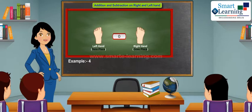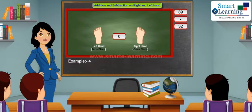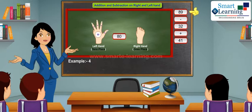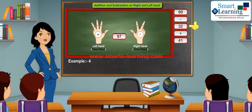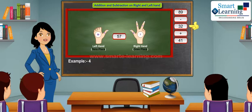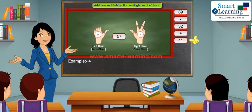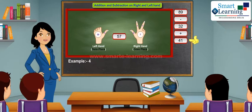Let's solve: 89 minus 32 plus 41. Take 89 on your left and right hand respectively. In order to subtract 32, put down 2 fingers on your right hand and 3 fingers on your left hand.